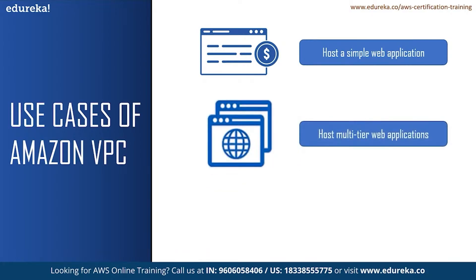With VPC you can also host multi-tier web applications and strictly enforce access and security restrictions between web servers, application servers, and databases. You can launch web servers in a publicly accessible subnet while running your application servers and databases in a private subnet. This will ensure that the application servers and databases cannot be directly accessed from the internet. To create a VPC for this use case, you can select 'VPC with public and private subnet' in the Amazon VPC console wizard.